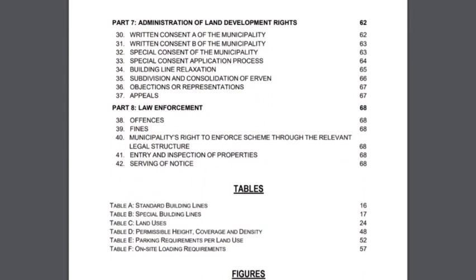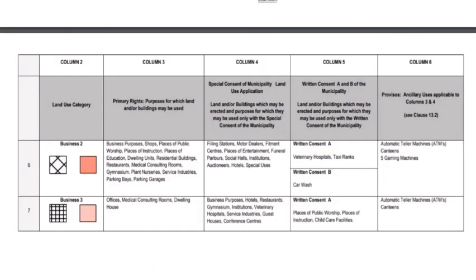For this exercise we will go to page 27 for the land use table. In column 2 you'd find the land use category; in column 3, the primary rights of that category; in column 4, special consent municipal land use applications. In column 5 you'd find written consent A and B — for example, a Business 2 property may, with written consent from the municipality, be used as a veterinary hospital or taxi rank. Column 6 contains auxiliary uses applicable to columns 3 and 4, Clause 13.2, such as automatic teller machines, canteens, and gaming machines.